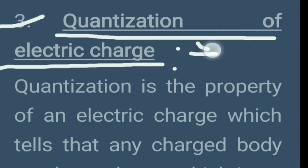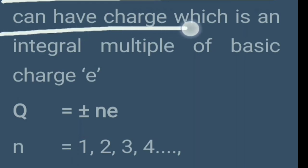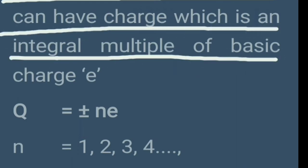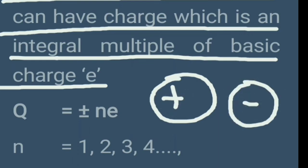Third है quantization of electric charge। Quantization की definition: quantization is the property of an electric charge which tells that any charged body can have charge which is an integral multiple of basic charge। यानी body पर positive या negative charge रहेगा। Integral multiple का अर्थ है कि charges की संख्या 2, 3, 4 हो सकती है — n की value 1, 2, 3, 4 whatever it may be।